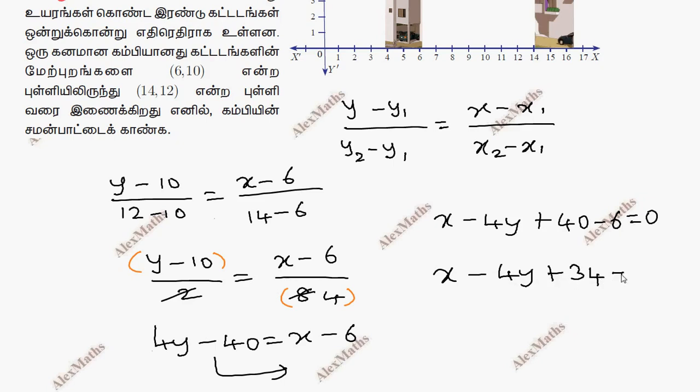x minus 4y plus 34 equal to 0. This is the equation of the line and the rod joining the terrace of the building.